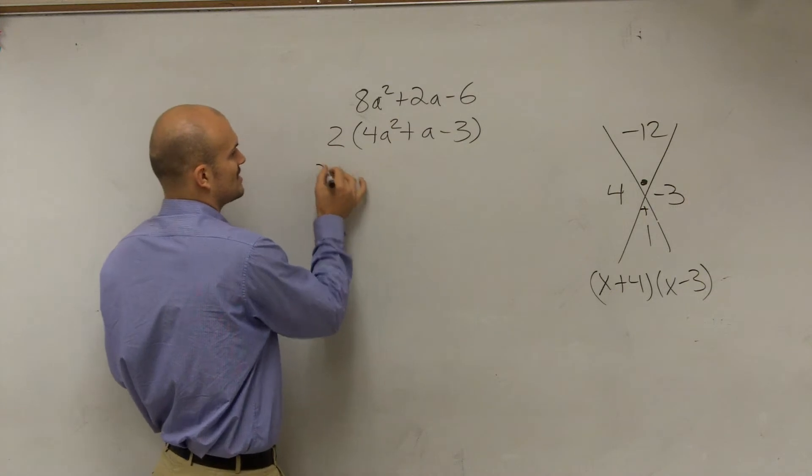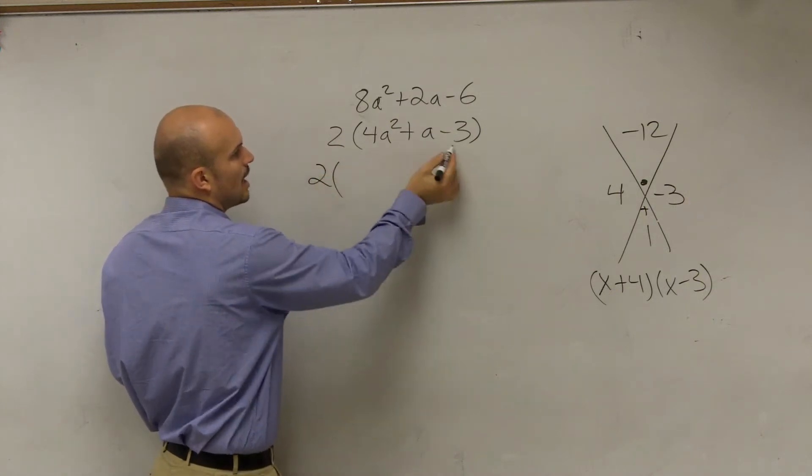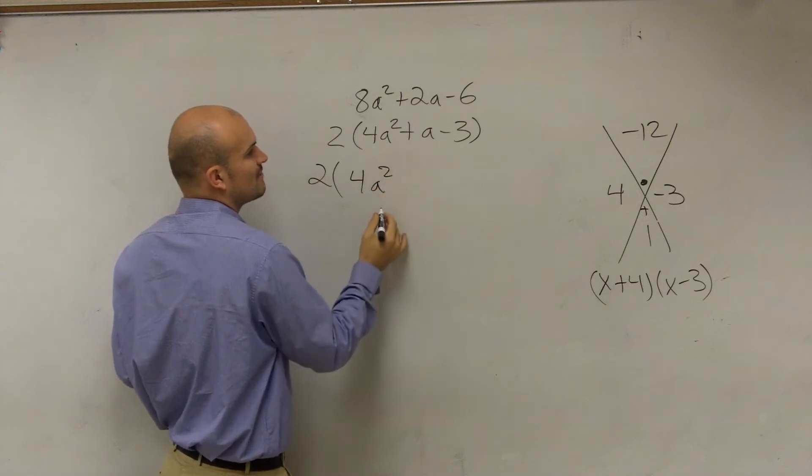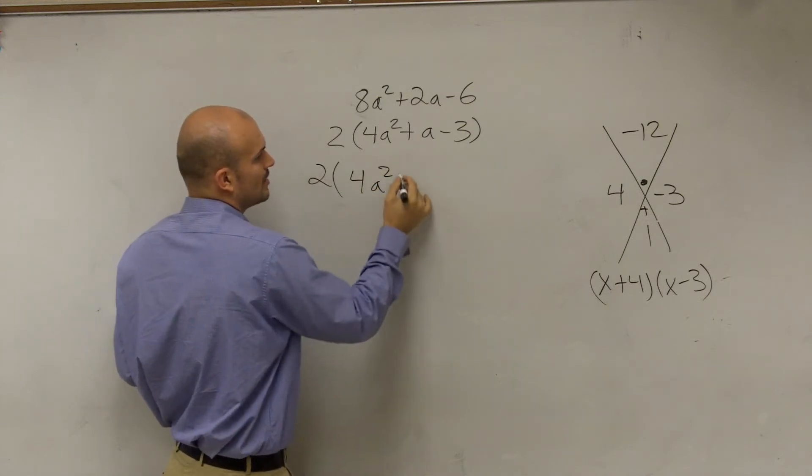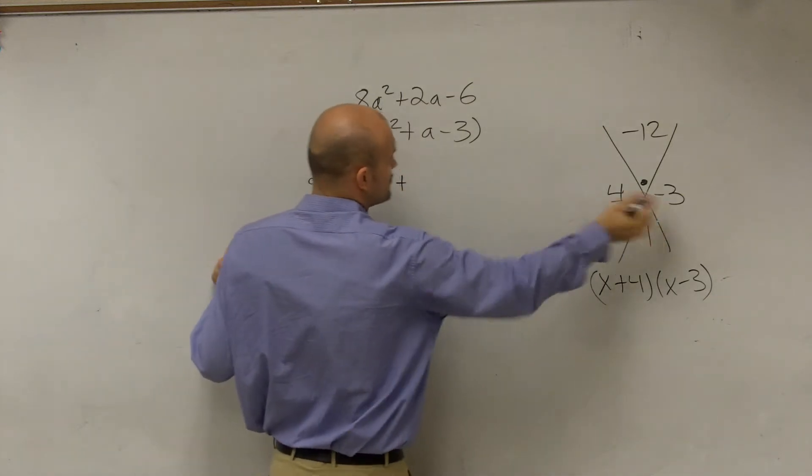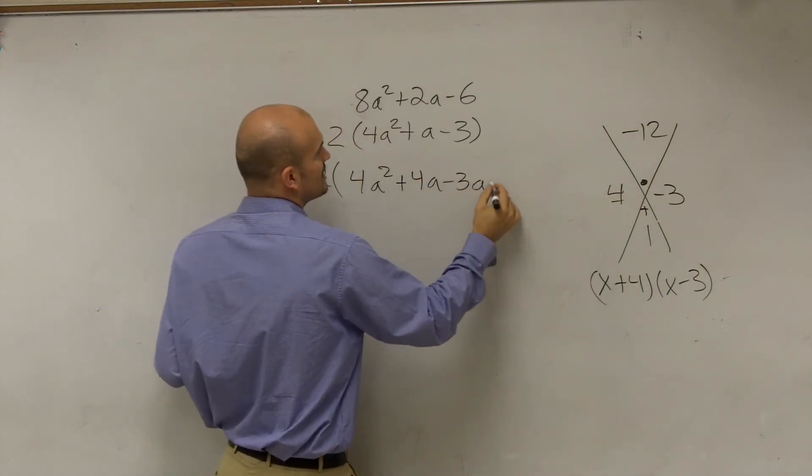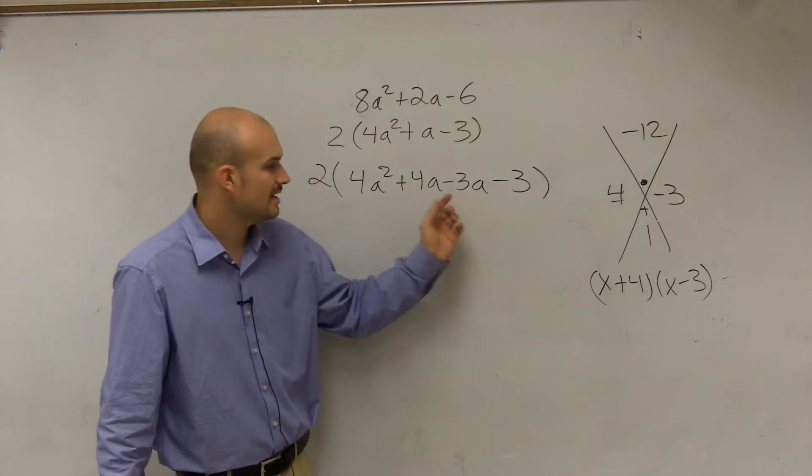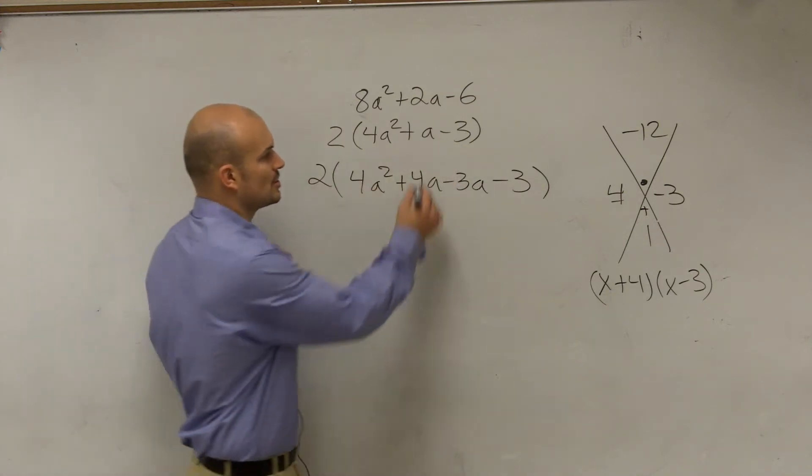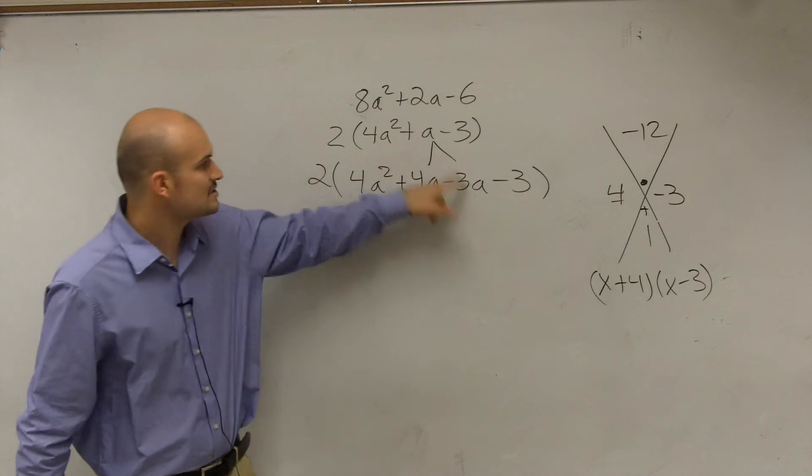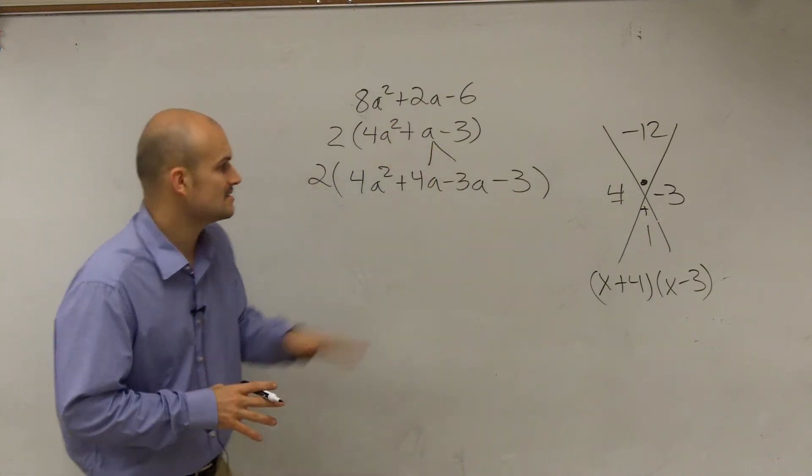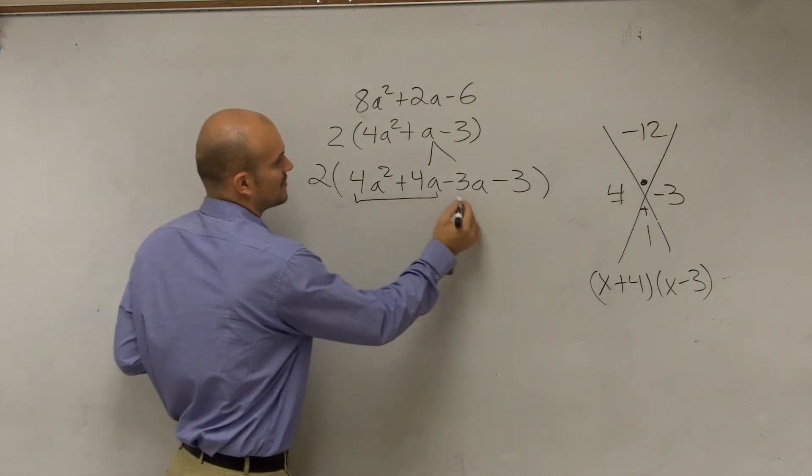So this is not the rewritten as a product. What we need to do to rewrite this as a product is I need to now break this apart, or rewrite the equation. So I'm going to say 4a squared, and then what I'm going to do is I'm going to write these two terms, plus 4a minus 3a minus 3. So what I've now done is I've written these as my middle term, because 4a minus 3a is equal to a.